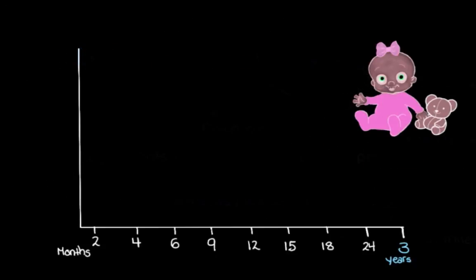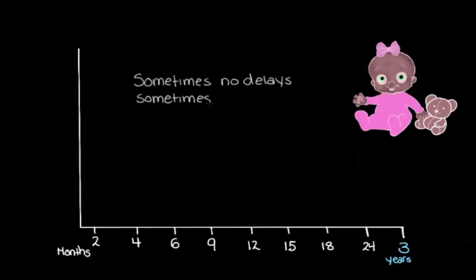For the disorders we've looked at, these are just examples of some of the milestones that might be delayed. Sometimes we might not see any major delays in key milestones, and sometimes we might see quite a few delays across several milestones. This can depend on the specific disorder and the severity of the impairments or damage in the brain. Hopefully this gets you thinking a bit about milestones in normal development and the different types of neurodevelopmental disorders.